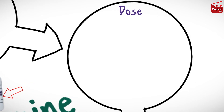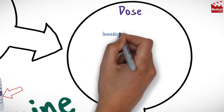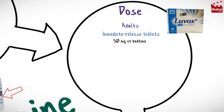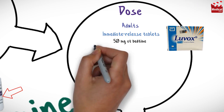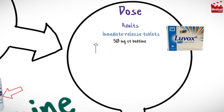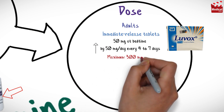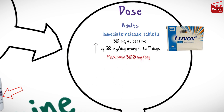The usual dose of fluvoxamine immediate release tablets for adults is 50mg at bedtime, that can be increased by 50mg per day every 4–7 days until the desired effect, up to a maximum dose of 300mg per day.